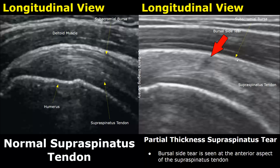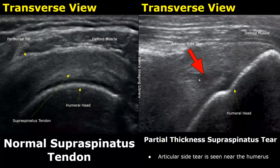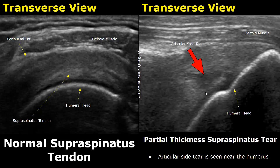This right here is the subacromial bursa. This side of the tendon is right next to the bursa, hence it is known as the bursal side. This is a partial thickness supraspinatus tear at the articular side. The articular side is right next to the humerus, so this part of the tendon is known as the articular side, and this is the partial thickness tear.